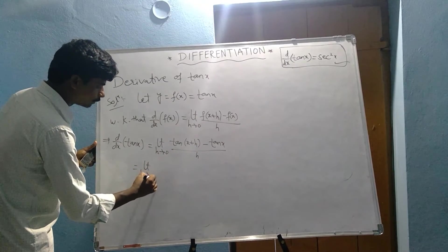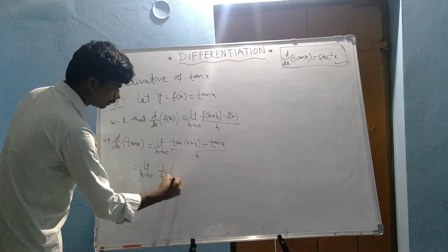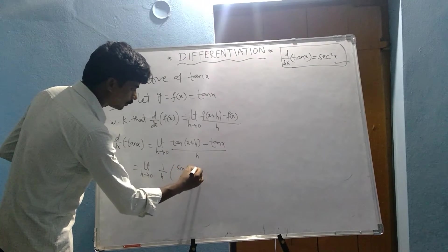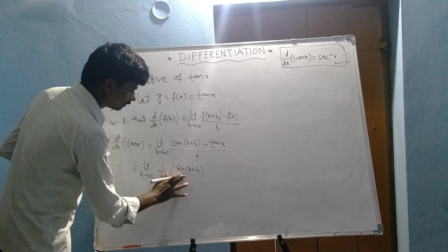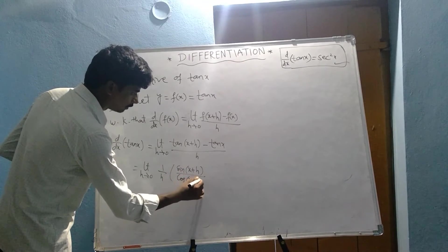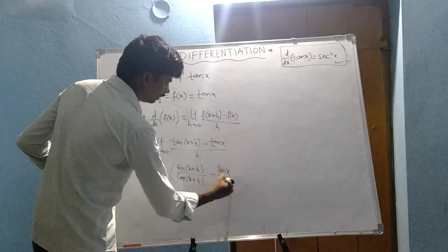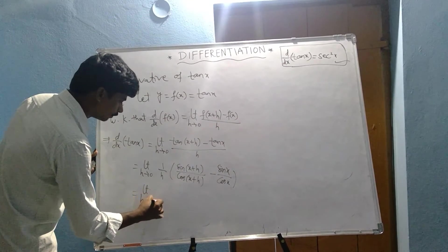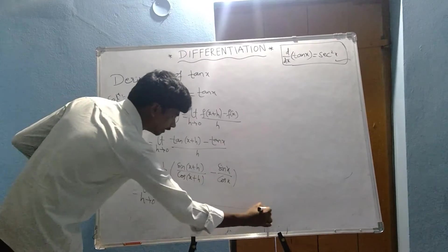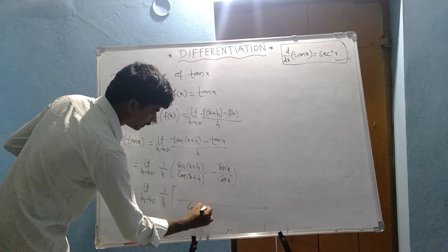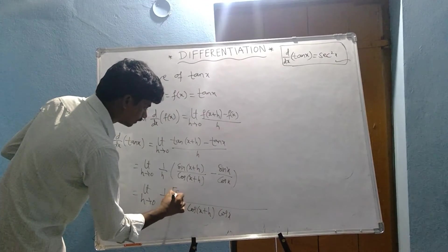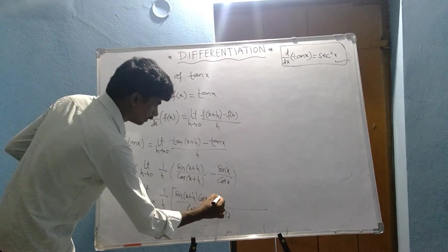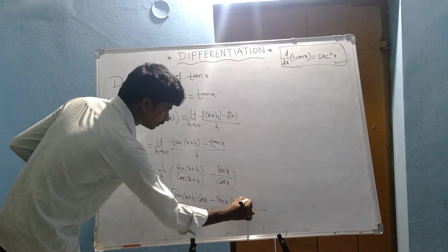That equals the limit as h tends to 0 of 1/h into [sin(x+h)/cos(x+h) minus sin x/cos x]. Taking the LCM as cos(x+h) times cos x, the numerator becomes sin(x+h)·cos x minus sin x·cos(x+h).